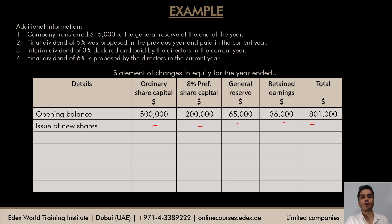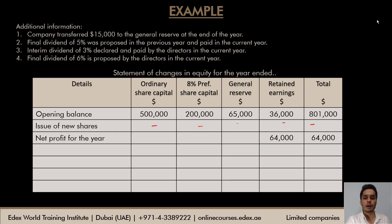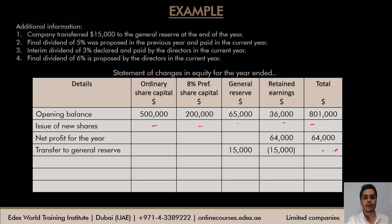Net profit of 64,000 from the income statement is added to retained earnings, since retained earnings is accumulated profits. From the additional information: the company transferred 15,000 to general reserve from retained earnings, so retained earnings decreases by 15,000 and general reserve increases by 15,000. The total column shows zero change for this transfer as there is no change in overall equity.